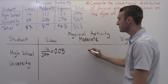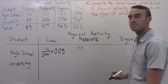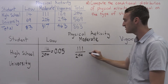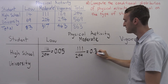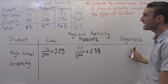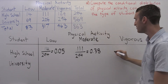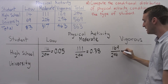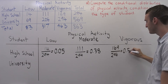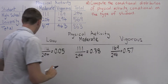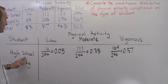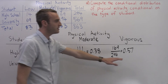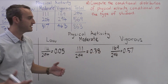Moving on to the moderate case, we have 111 high school students with moderate levels of physical activity. Again we have 294 total high school students, so we get 0.38. For the vigorous category, we observed 169 high school students and again we sampled 294, so we get 0.57. This is our conditional distribution of physical activity given high school students: 5% in the low category, 38% in the moderate category, and 57% in the vigorous category, and these sum to 100%.